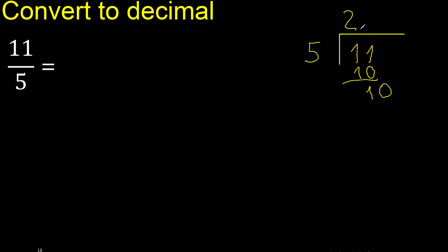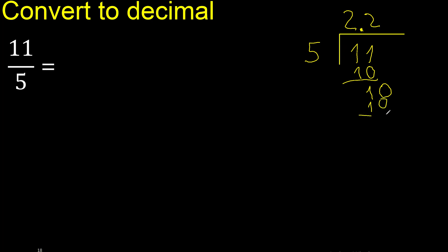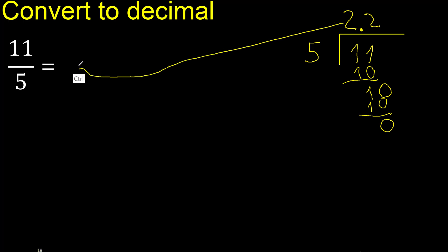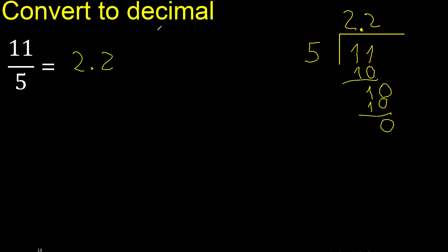Always complete with 0, and here with a point. Bring down to get 10. 5 multiplied by which number: multiplied by 3 is 15, greater; multiplied by 2 is exactly 10 — ok. Subtract: remainder is 0, therefore finish.